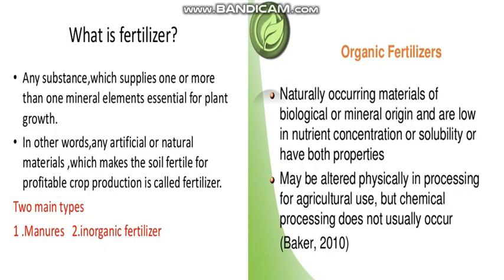So what are fertilizers? They are chemical substances which we add to the soil to give minerals to the soil. Fertilizers contain minerals necessary for the healthy growth of plants. Any substance which supplies one or more mineral elements essential for plant growth is called a fertilizer. In other words, any artificial or natural material which makes the soil fertile and good for the healthy growth of plants for profitable crop production is called a fertilizer.